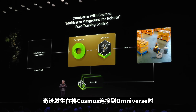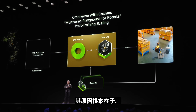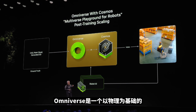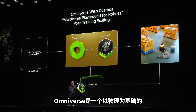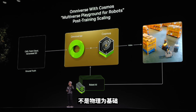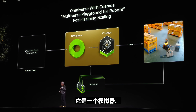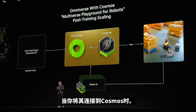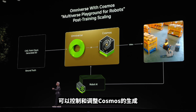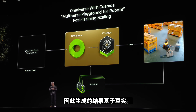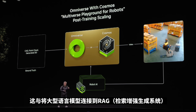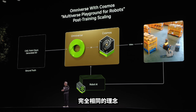The magic happens when you connect Cosmos to Omniverse. Fundamentally, Omniverse is physics-grounded — algorithmic, principled physics simulation. It's a simulator. When you connect that to Cosmos, it provides the grounding — the ground truth — that can control and condition the Cosmos generation. As a result, what comes out of Cosmos is grounded on truth. This is exactly the same idea as connecting a large language model to a RAG — a retrieval augmented generation system.